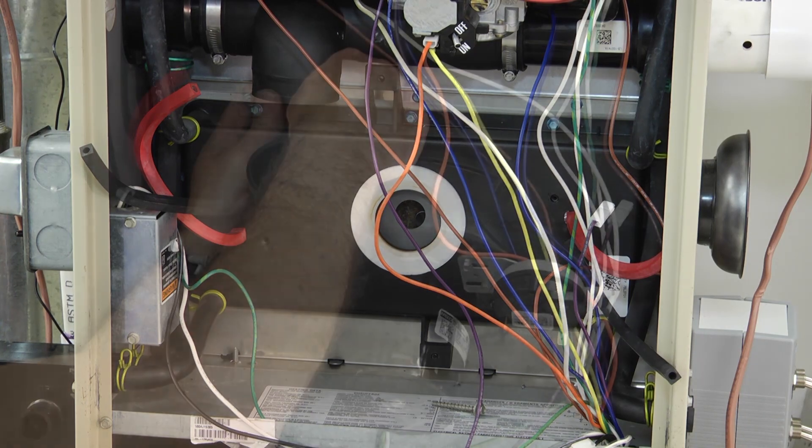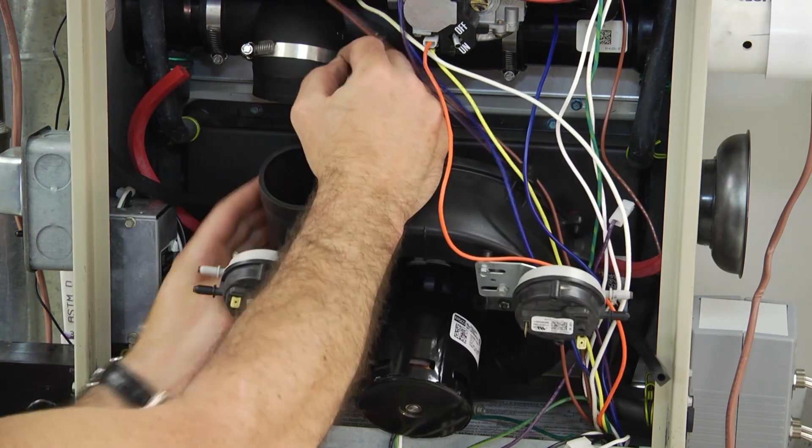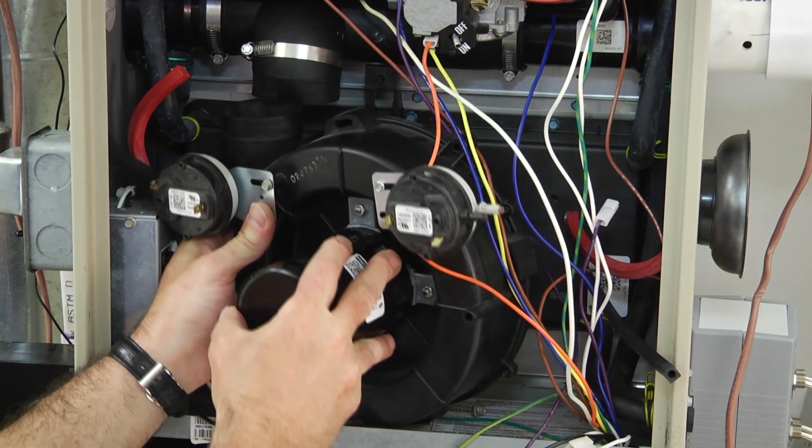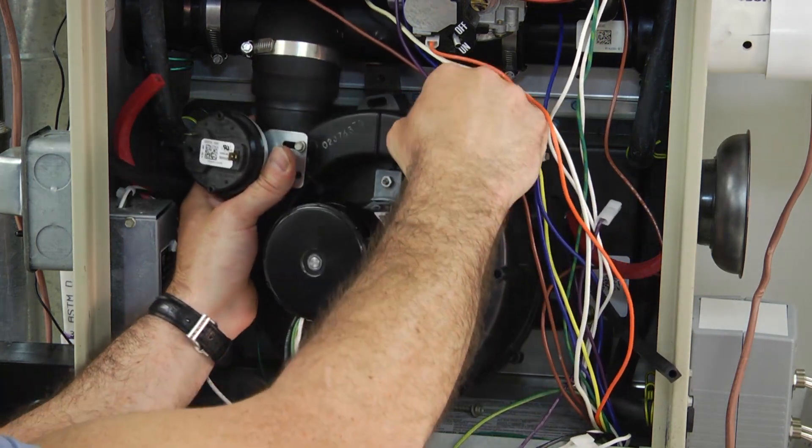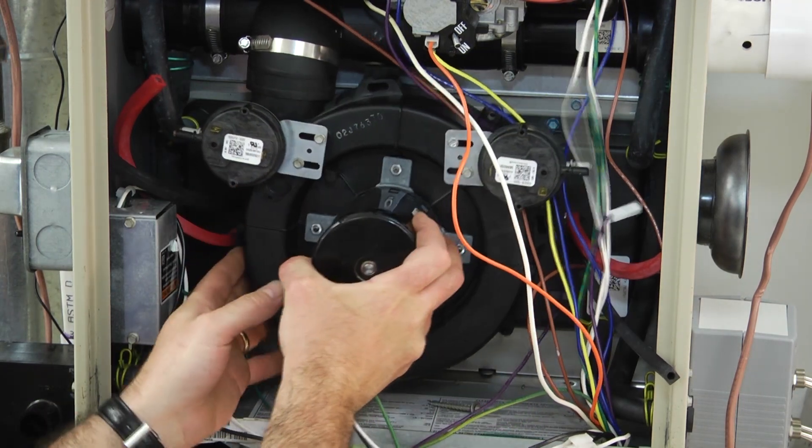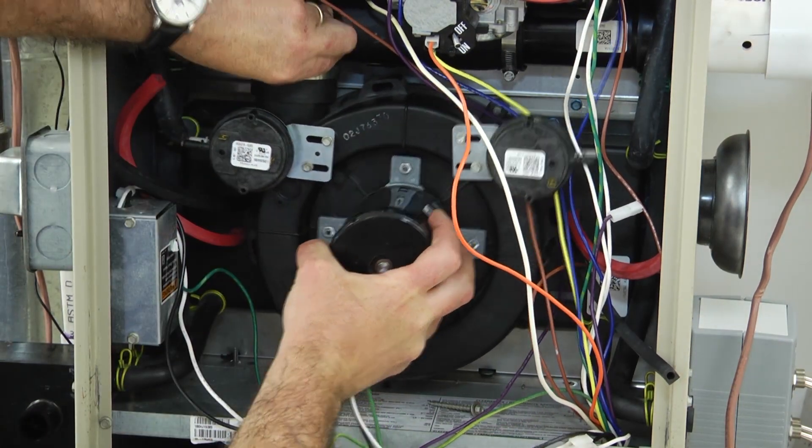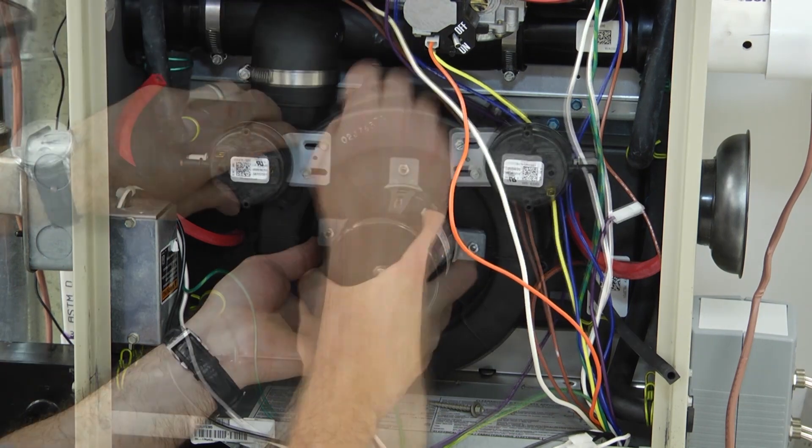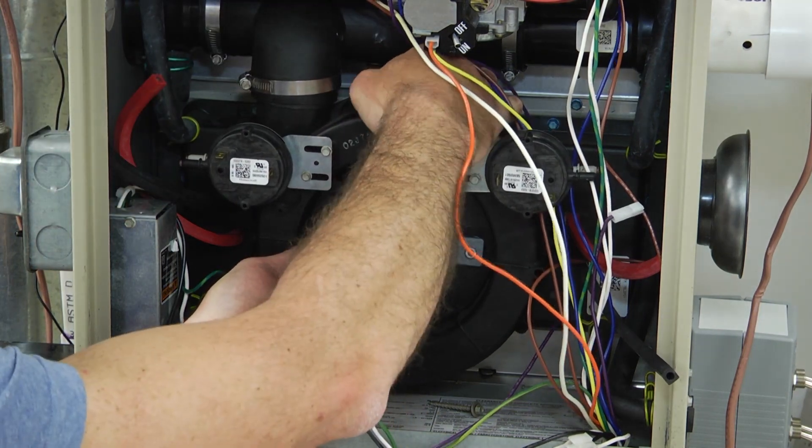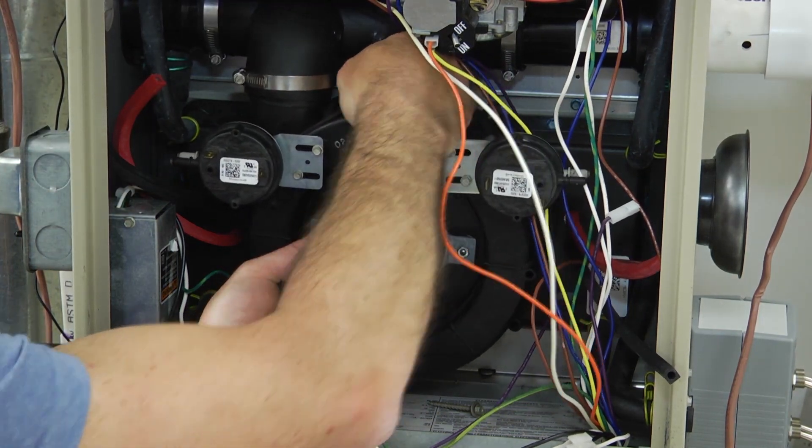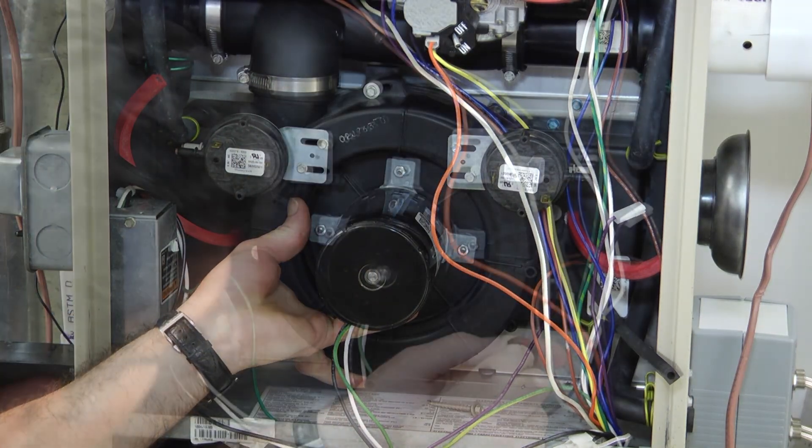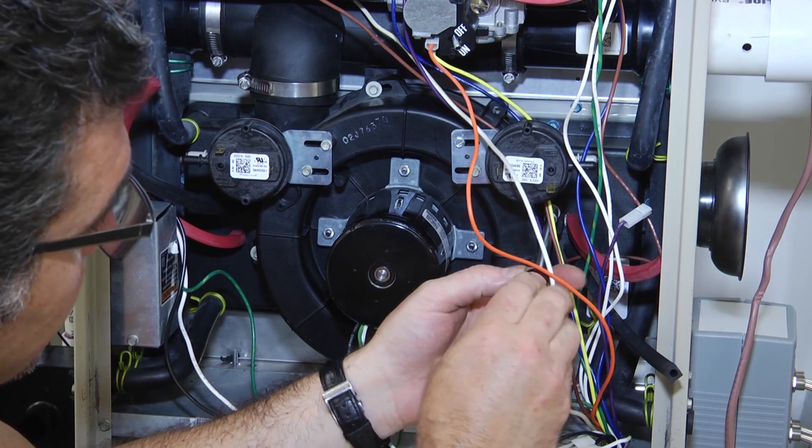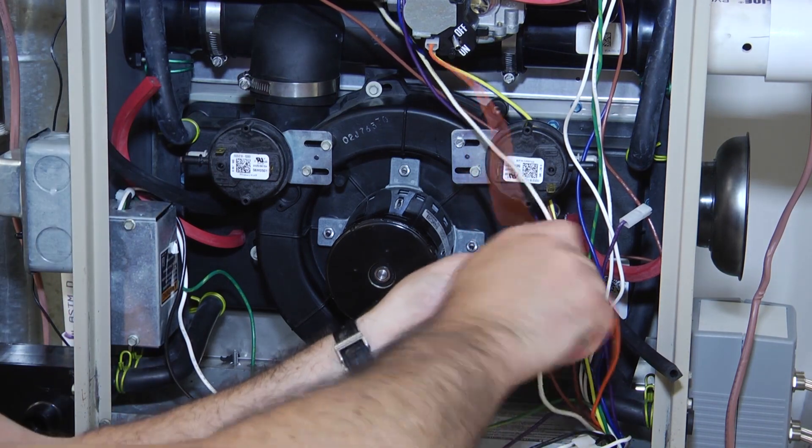So let's go ahead and put the motor back in there. Make sure your clamp's in there. There we go. Just put the one in there nice and loose and line the rest up as I go. You want it tight enough but you don't want it to crack the motor housing.